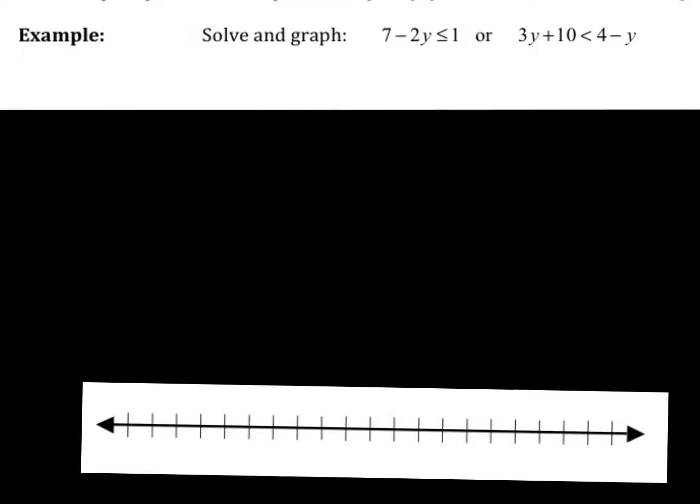So if we solve for the first one, I would subtract seven and get negative 2y is less than or equal to negative six. Divide by negative two. When we divide by a negative, we need to flip our sign. So this now becomes a greater than or equal to. So y is greater than or equal to... Negative divided by a negative positive three is positive three. So there's our first inequality.